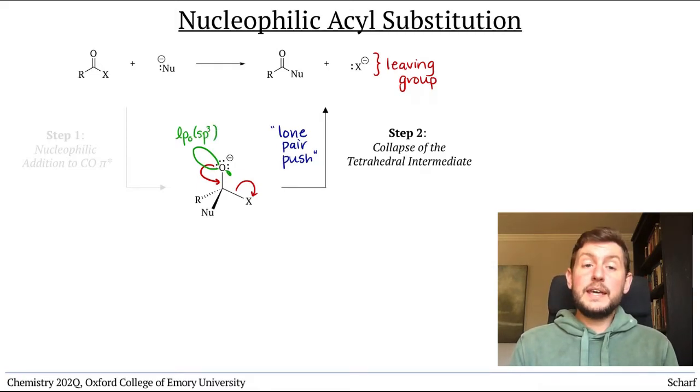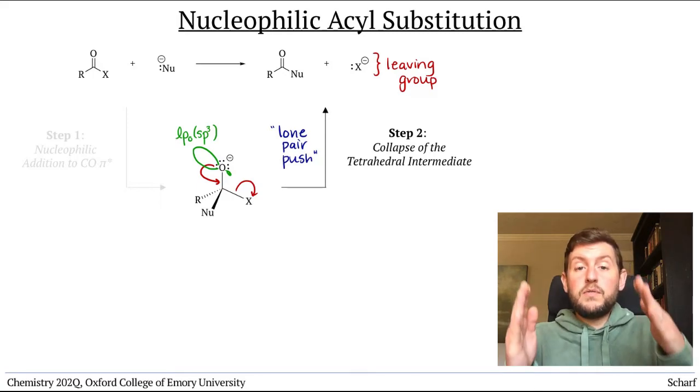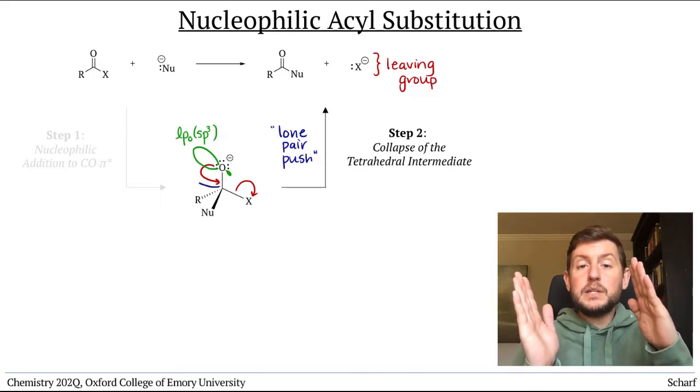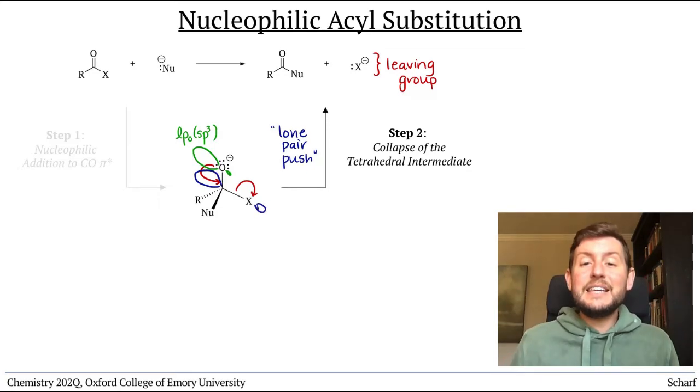In order to kick out the leaving group, that orbital must overlap with the sigma star orbital of the C leaving group bond. Here that's sigma star CX.